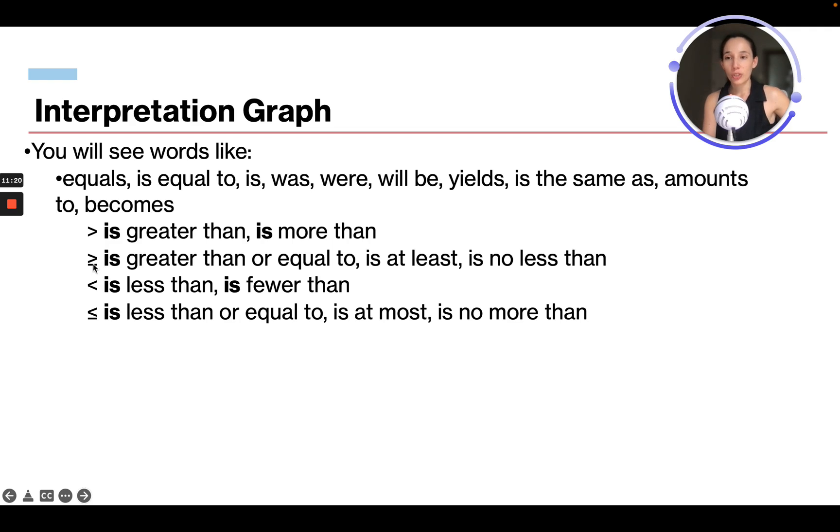It's greater than or equal to, you get that equal sign. Is less than, our alligator's pointing away from it to the other bigger number. It's fewer than, and same is less than or equal to, is at most, is no more than. You get that equal sign with the less than sign.